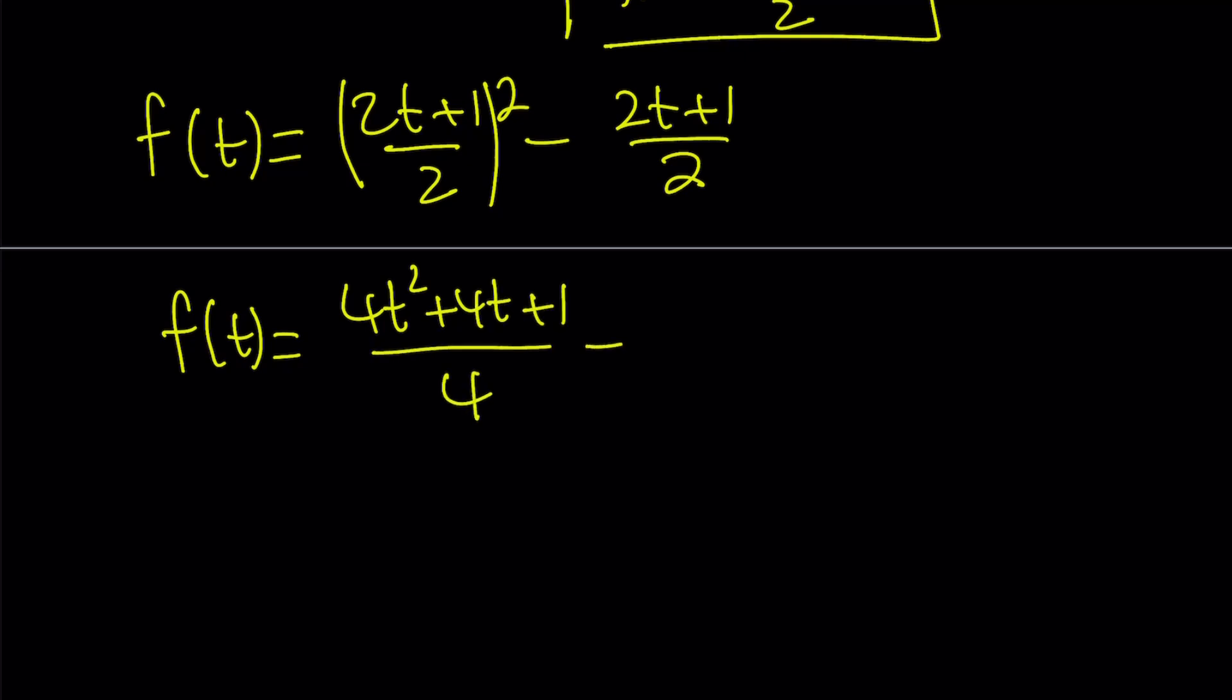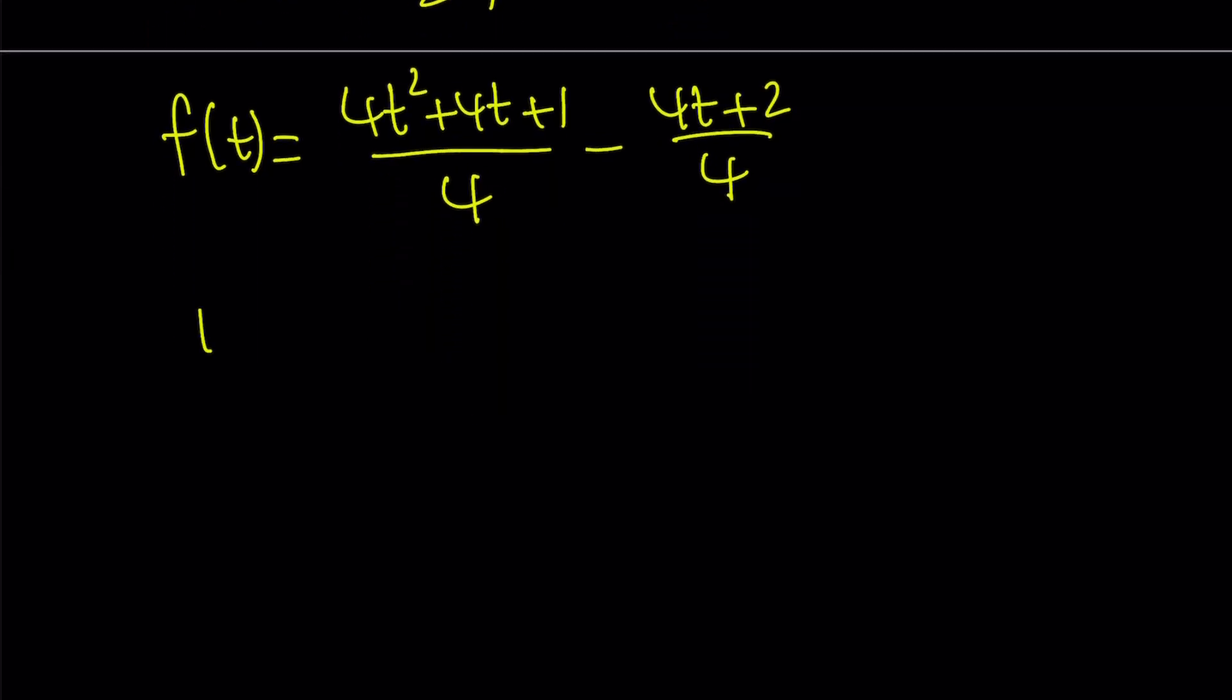And if you double the top here so that you can make a common denominator, if you subtract those, 4t is going to cancel out. And you're going to get f of t equals 4t squared minus 1 over 4.